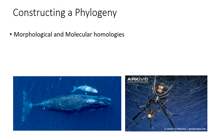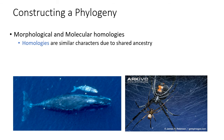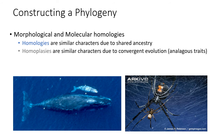Constructing a phylogeny is based on both morphological and molecular homologies. A homology is a similar character due to shared ancestry. Homoplasy is a similar character due to convergent evolution — when two traits appear independently but not because of a shared common ancestor with that trait, but rather due to some environmental factor. For example, whales and fish are both streamlined not because of common ancestry but because they both live in the ocean and streamlining has been selected for. By contrast, both spiders and whales having mitochondria is a homology, due to shared ancestry.